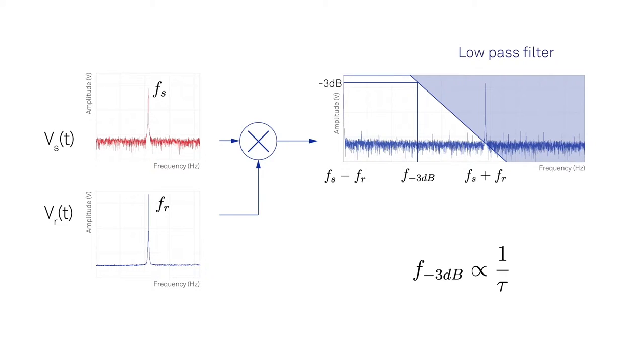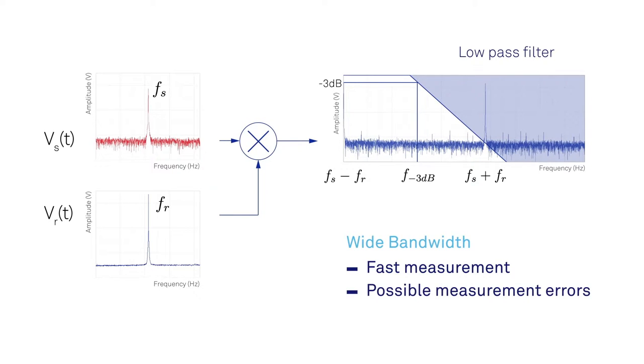Setting the filter bandwidth is always a trade-off. Making it too wide will lead to systematic measurement errors, as the 2F component may be leaking into the output signal. Moreover, a larger bandwidth means more noise, and hence a lower signal-to-noise ratio.